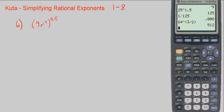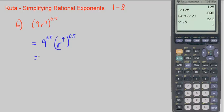Number 6: we have 9r to the 4th, to the 0.5 power. We distribute that 0.5 power: 9 to the 0.5 — putting it in our calculator — is 3, and r to the 4th: 4 times 0.5 is 2, giving r squared. So we get 3r squared. Also note that 0.5 equals 1 half, so we could have done this with 1 half as well.